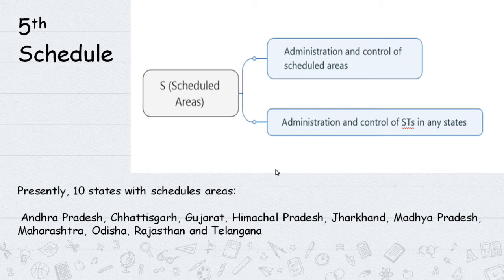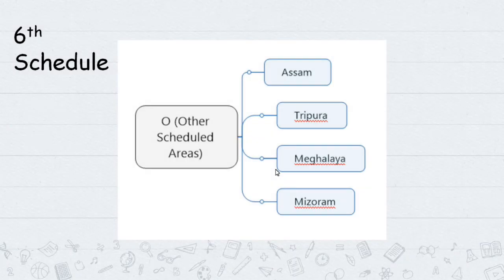States covered under Fifth Schedule include Gujarat, Andhra Pradesh, Telangana, Maharashtra (Narendra Modi's home state Gujarat), and others. The Sixth Schedule covers tribal areas in northeastern states: Assam, Tripura, Meghalaya, and Mizoram.